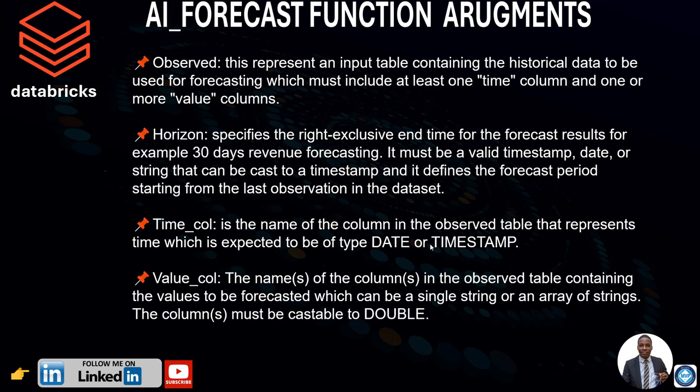The third argument is 'time_column'. This is the name of the column in the observed table that represents the time, which is expected to be of type date or timestamp. The fourth mandatory argument is 'value_column' — the names of the columns in the observed table containing the values to be forecasted, which can be a single string or an array of strings. The columns must be castable to double.